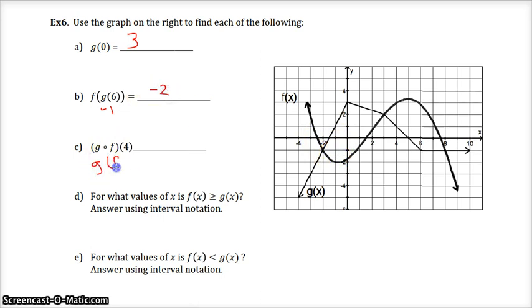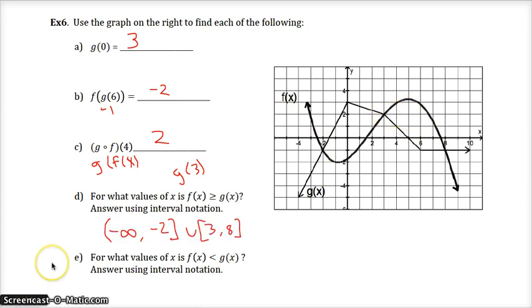g of f of 4. What's f of 4? f of 4 is 3. g of 3 is really what we're looking at on here, and g is this one. g of 3 is 2. For what values is f(x) greater than or equal to g(x)? It's whenever f is on top, so it's this zone, and then this zone. These are the areas where f is on top. And then the rest of the interval is where it's the opposite way, where f is less than, but it's not included, so it looks like this.